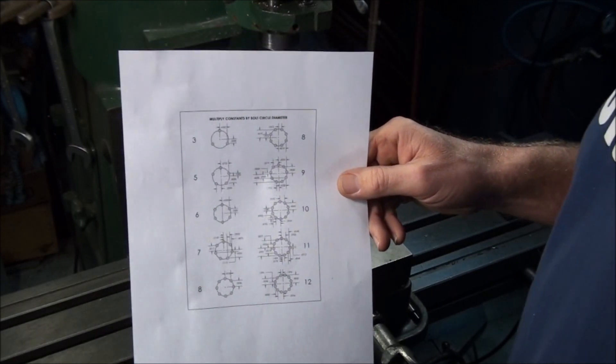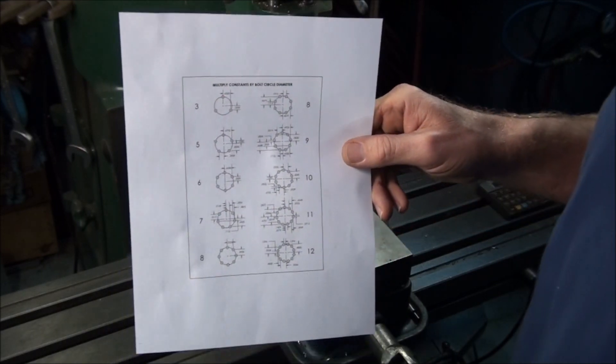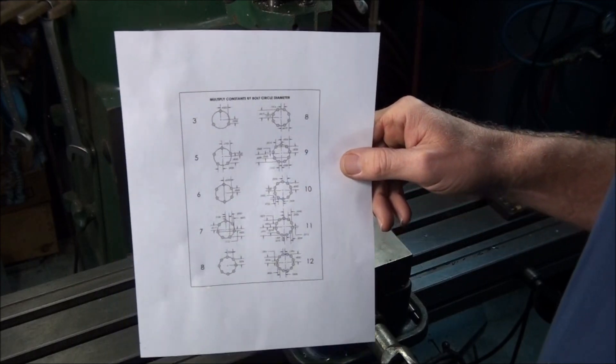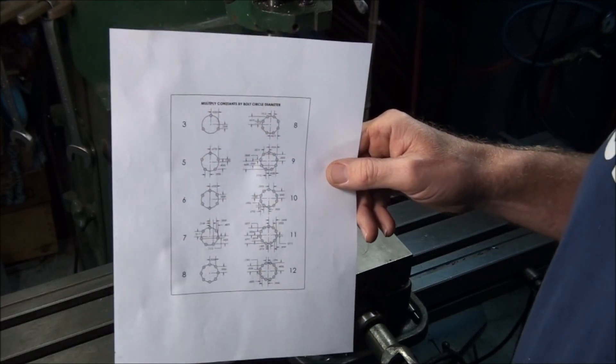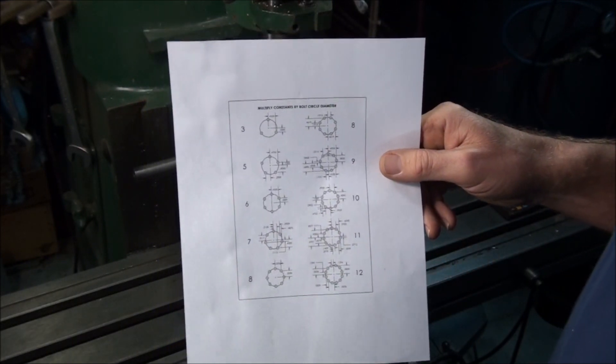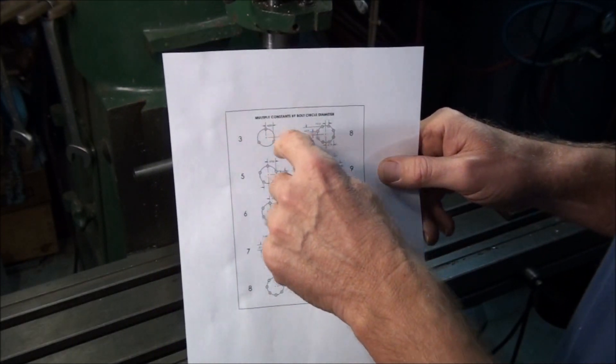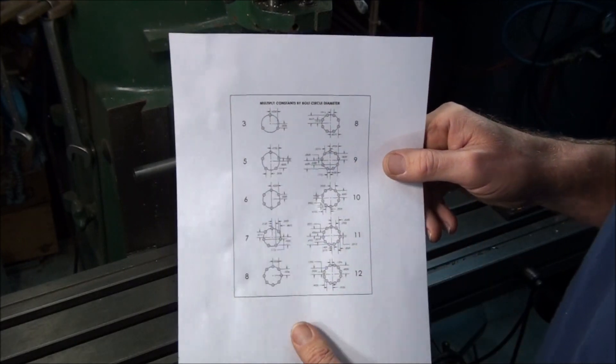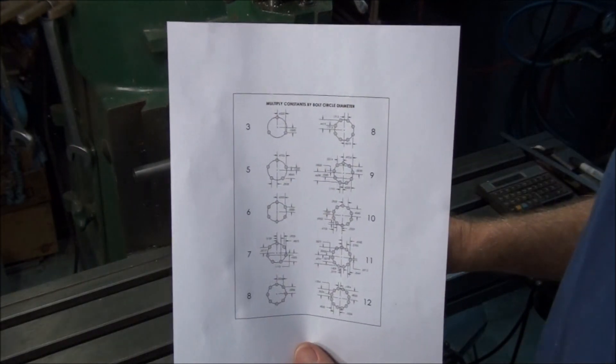I use a lot of charts to save time, and this is one I use probably the most often. I keep it laminated and stuck on a file cabinet right next to my mill, within easy reach. It saves a lot of time. It's a lot easier to go to this chart and calculate the center of your holes than it is to set up a rotary table or do it by trig.